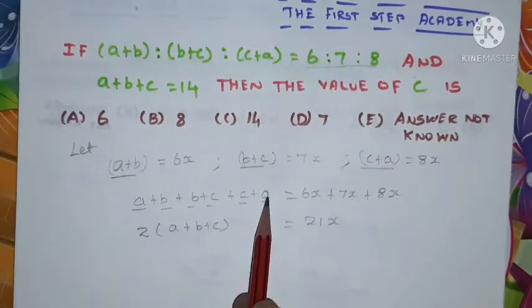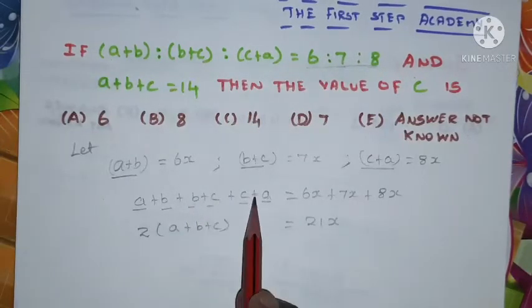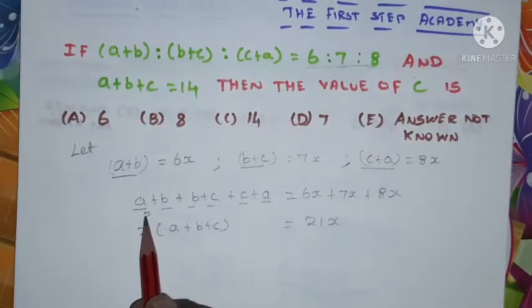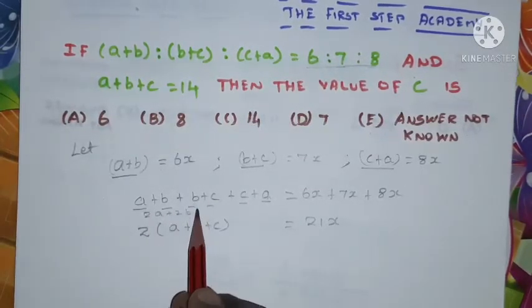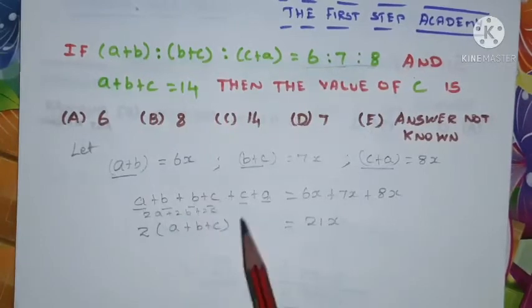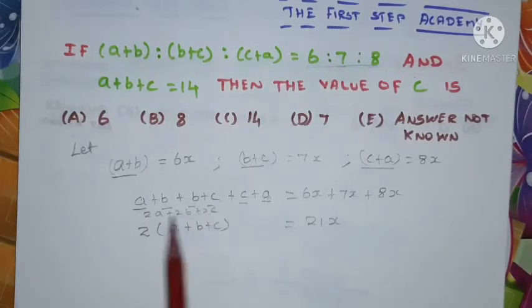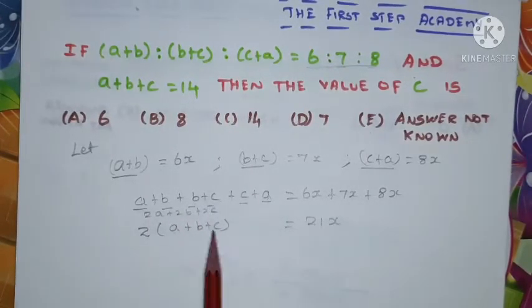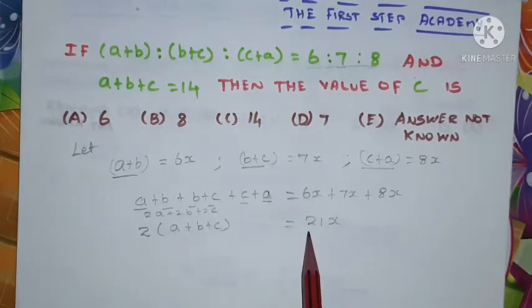a+a is 2a, b+b is 2b, c+c is 2c, so 2a+2b+2c. Taking 2 as a common factor: 2(a+b+c) = 21x.